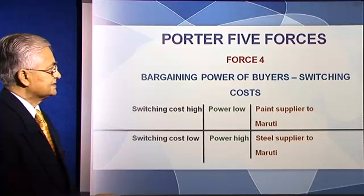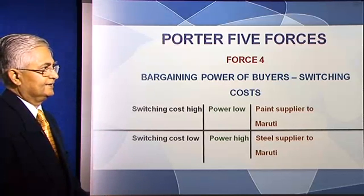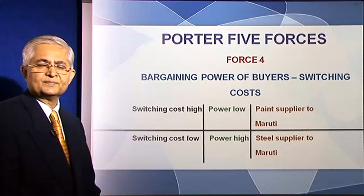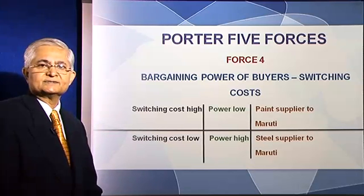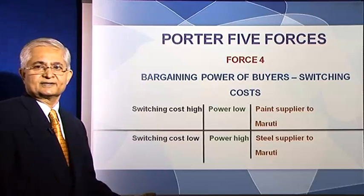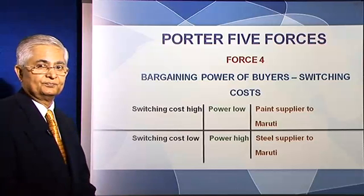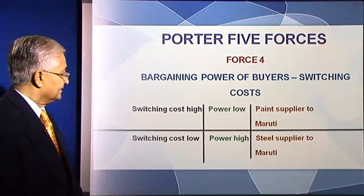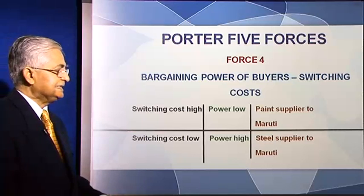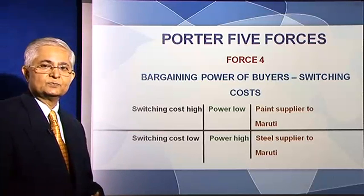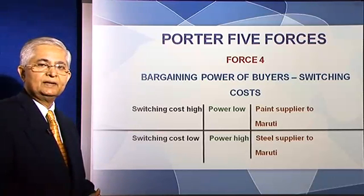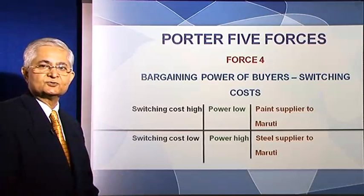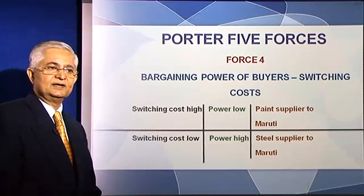On the other hand, look at steel. For Maruti, switching from one steel supplier to another is very easy because all suppliers make largely the same product, and switching costs are very low. Therefore, the power to bargain is with Maruti. In the automobile steel industry, the power is with the buyer, making it unattractive; in the automobile paint industry, the power is not with the buyer, making it attractive.